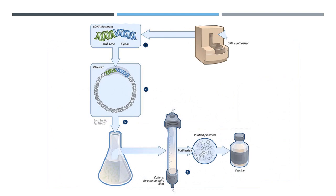The primers will in turn be used to generate a cDNA fragment containing both specific genes. The cDNA fragment is then inserted into a circular piece of DNA called a plasmid. The plasmid carrying the specific genes is grown in large quantities in bacteria and purified by column chromatography. The purified DNA plasmids carrying the specific transmembrane genes make up the investigational vaccine.